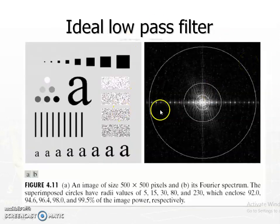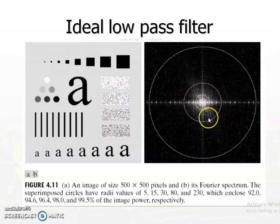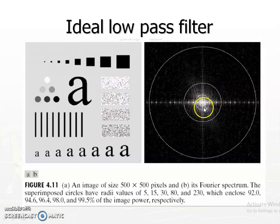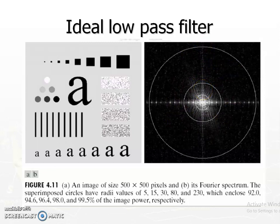This is ideal low-pass filtering. The spectrum is shown here, and the circles correspond to different cutoff frequencies. The cutoff values shown are d₀ equal to 5, 15, 30, 80, and 230. The key question is: how do we decide these thresholds? We decide the threshold d₀ based on the amount of energy we want to retain — how much energy we allow in the high frequencies determines the value of the threshold.